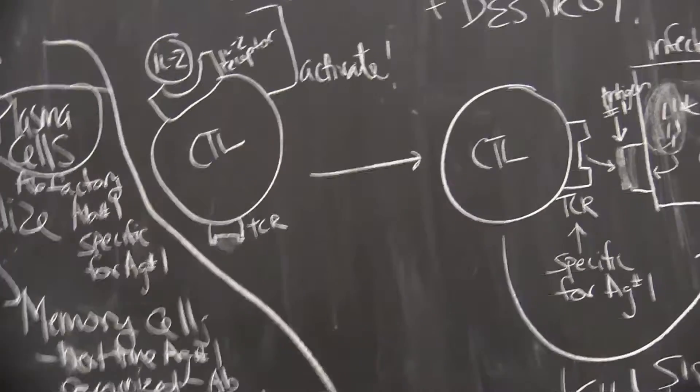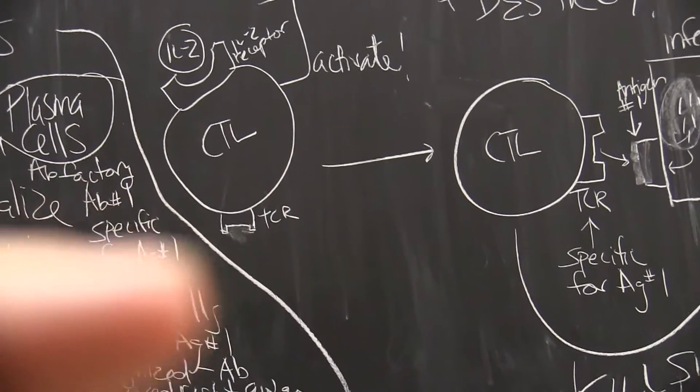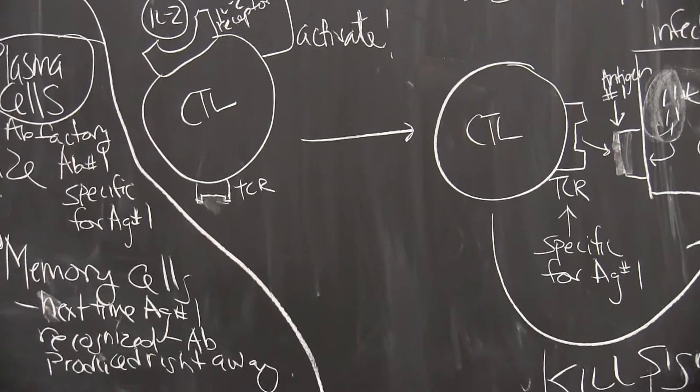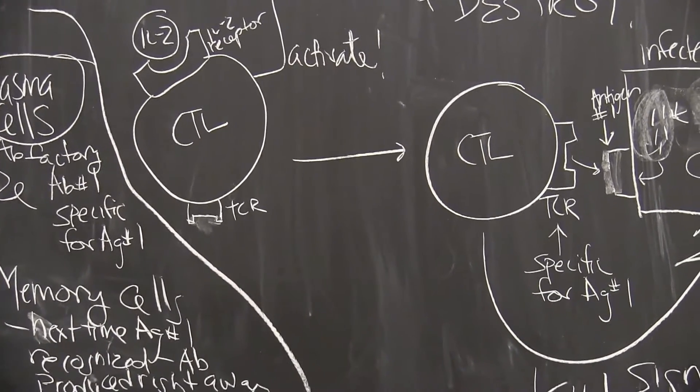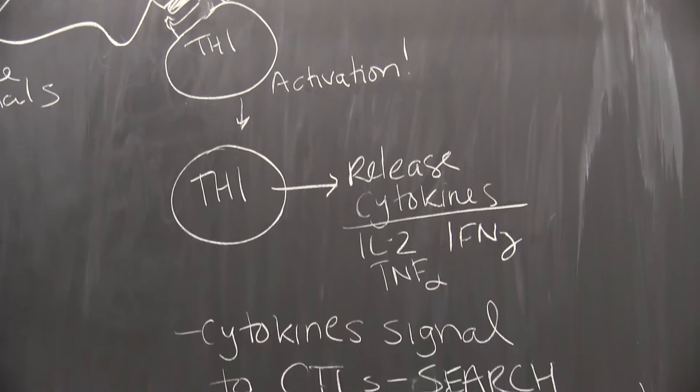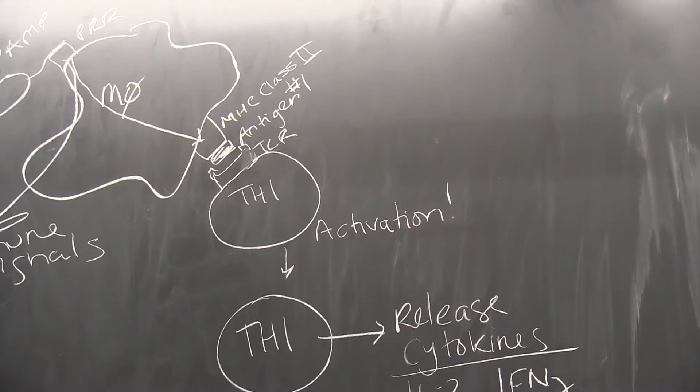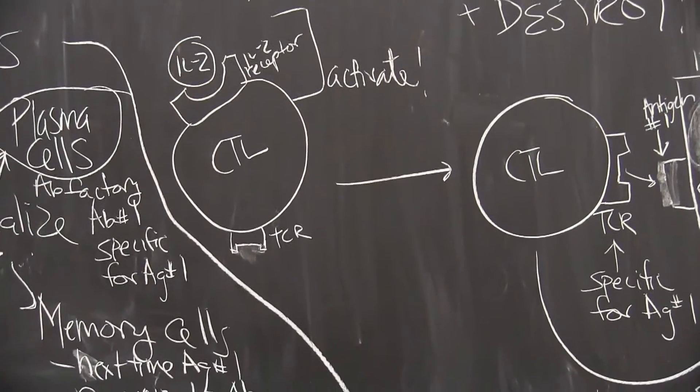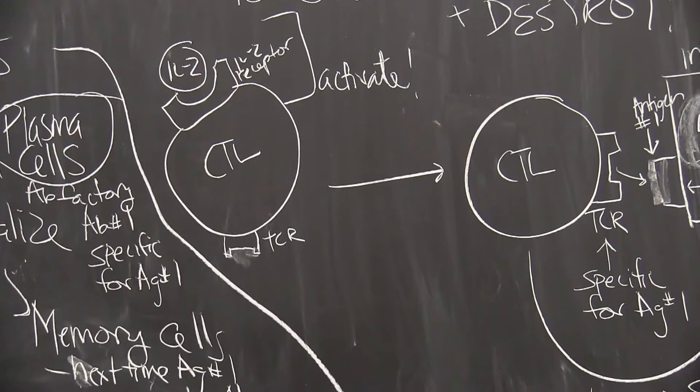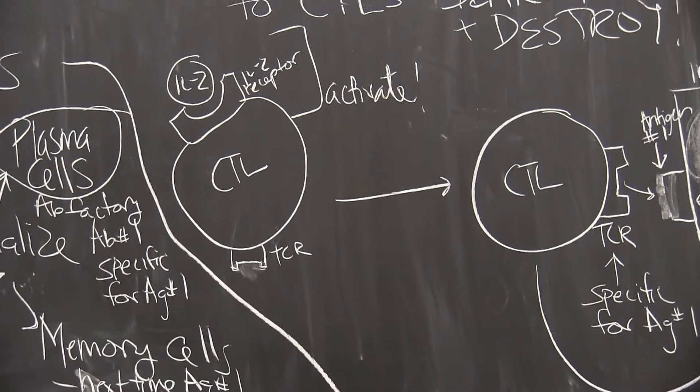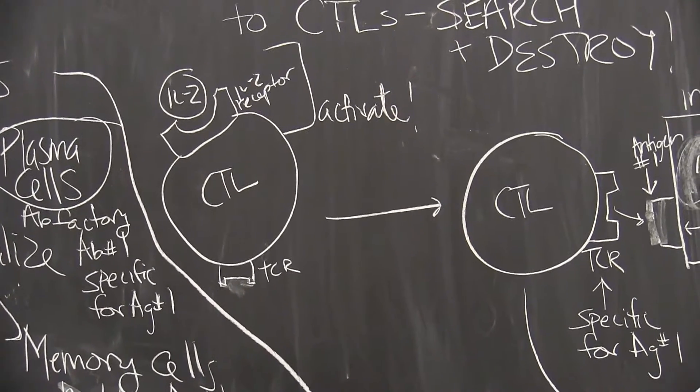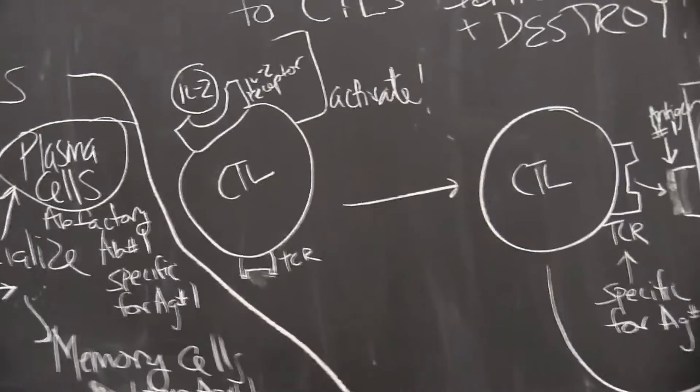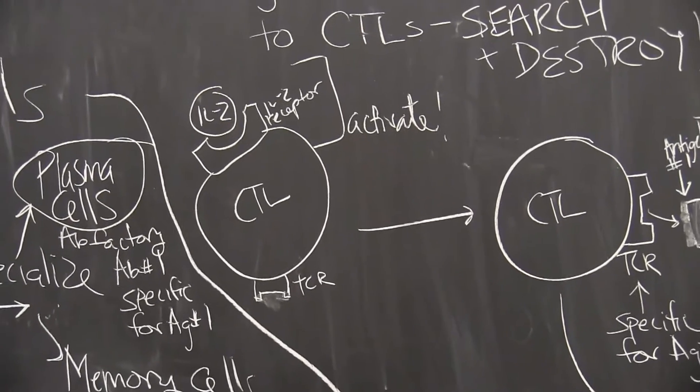If you notice down here, we have TCR. Remember, that's also the T cell receptor. So this T cell receptor, it was up on our helper T cells. And it's also down here on our killer T cell. And remember, this T cell receptor is specific for antigen number one. So another antigen will not work here. It's all very specific.